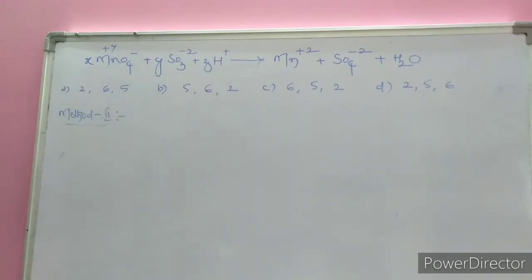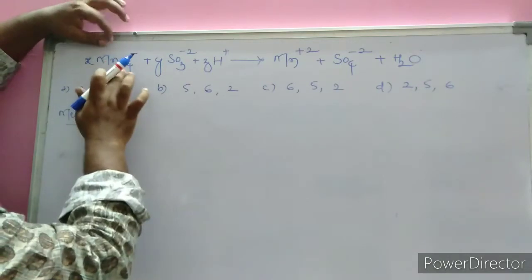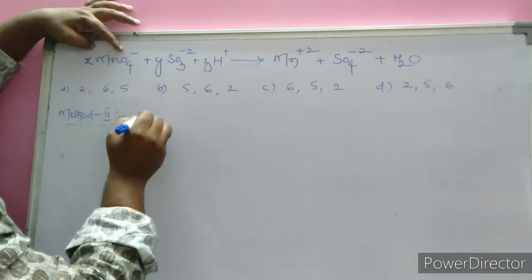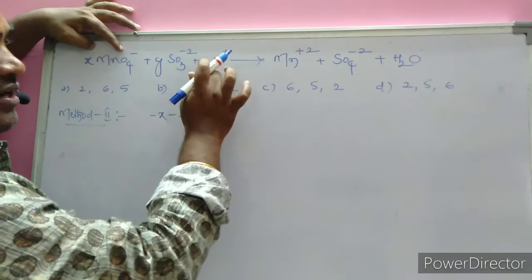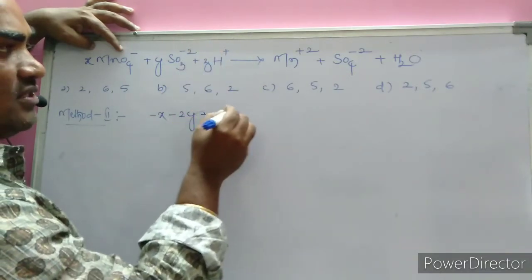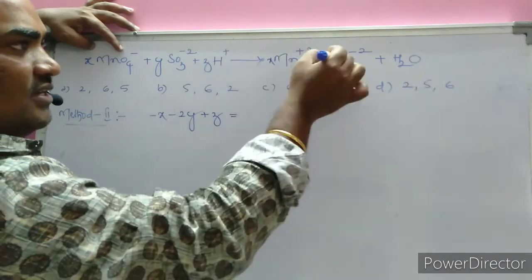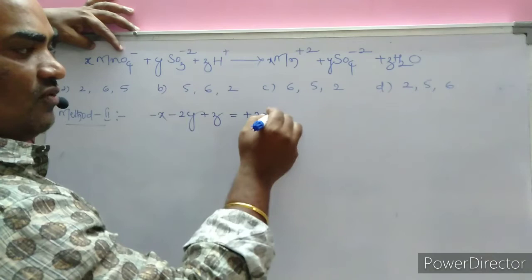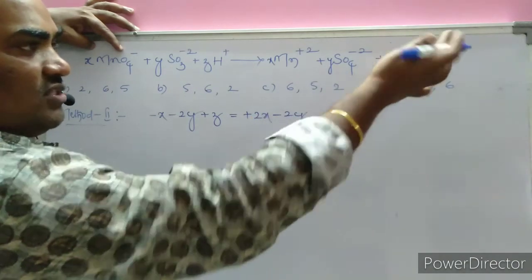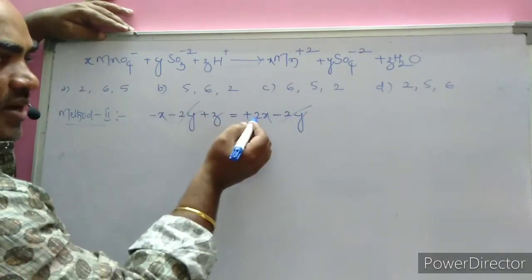According to the second method — the best and easiest way to find coefficients — we set up a mathematical expression. The charge on MnO4⁻ is minus 1, so minus 1 times x equals minus x. The charge minus 2 times y gives minus 2y, and plus 1 times z gives plus z. On the product side: plus 2 times x equals plus 2x, and minus 2 times y equals minus 2y. The minus 2y terms cancel.